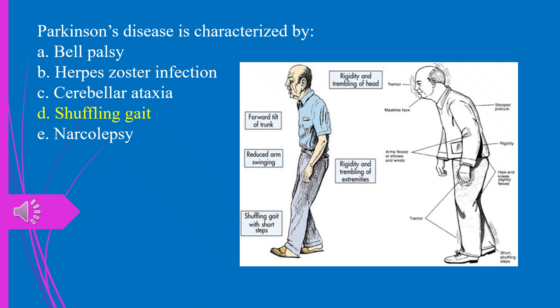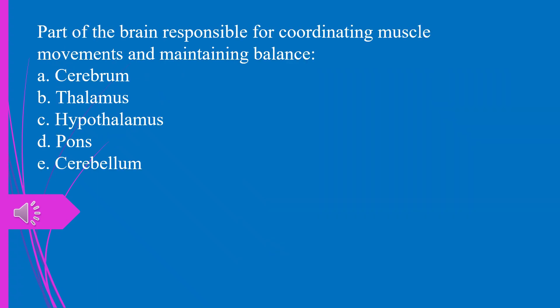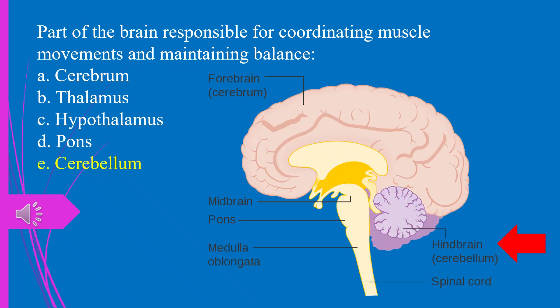Question 14. Part of the brain responsible for coordinating muscle movements and maintaining balance: a) cerebrum, b) thalamus, c) hypothalamus, d) pons, e) cerebellum. The answer is e, cerebellum.